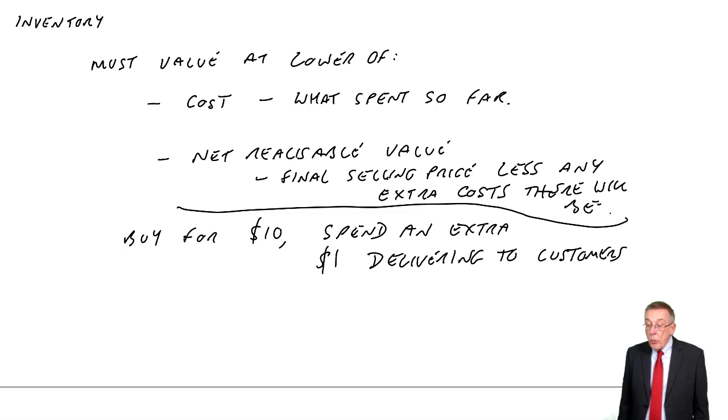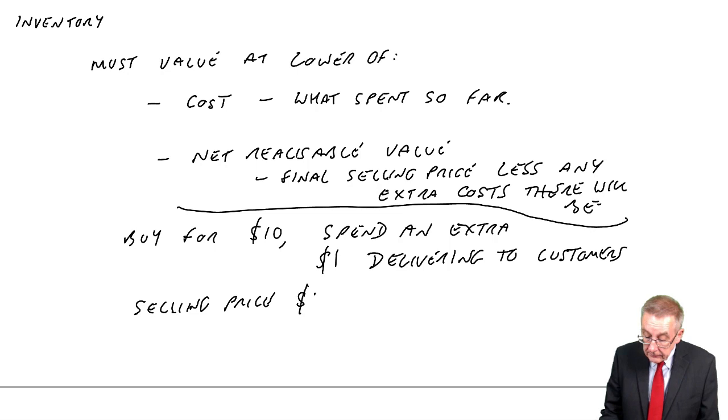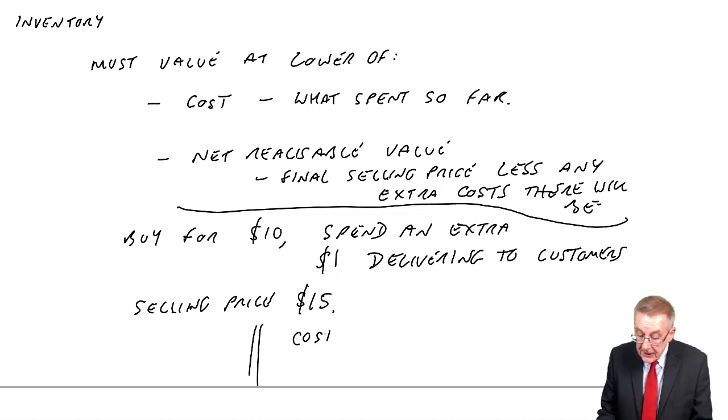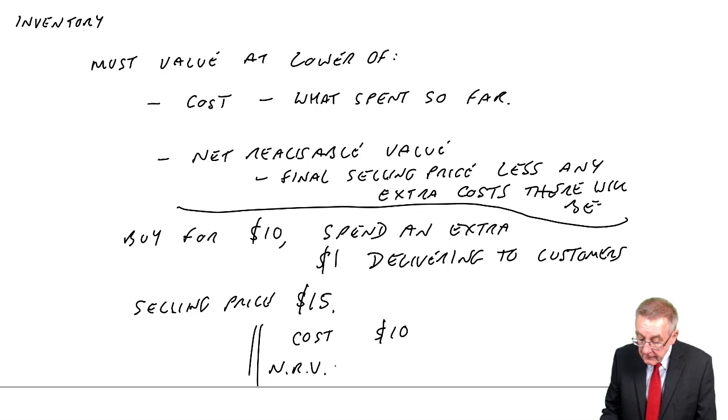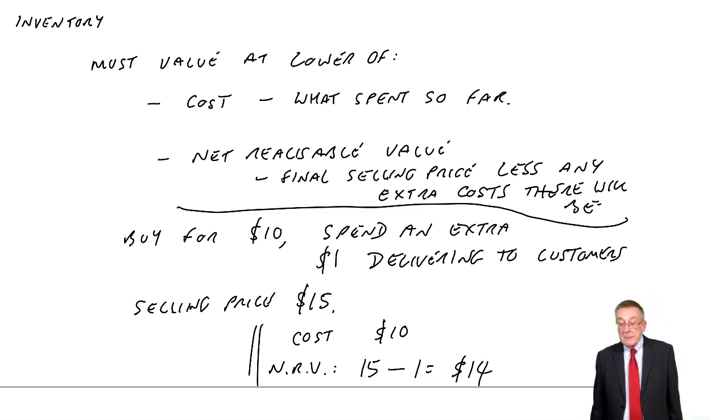Suppose these desks, I'm buying them for $10, I'm going to spend an extra dollar delivering to customers, and the selling price I expect to be $15. Well, as I've already said, for valuation purposes, the cost is $10. That's what I've spent so far. The net realizable value is the $15 I expect to sell them for less any future costs there are going to be before I sell them. Although I haven't spent it yet, I will have to spend an extra dollar when I come to deliver them. And so, the net realizable value would be $14.